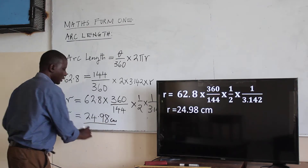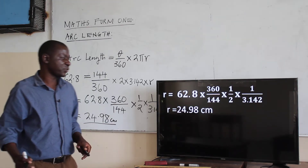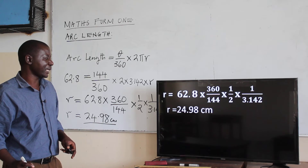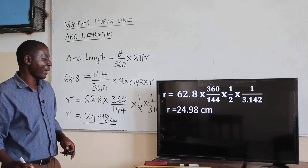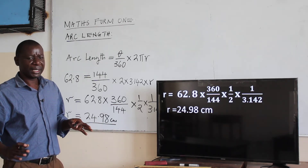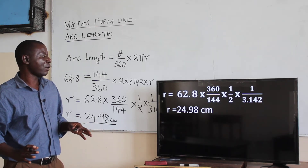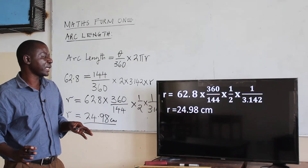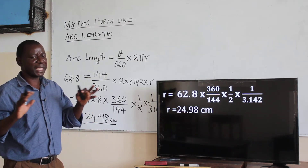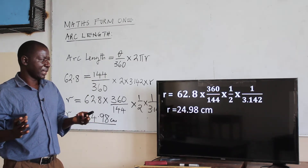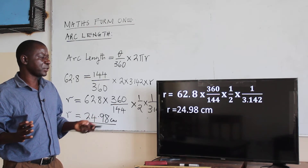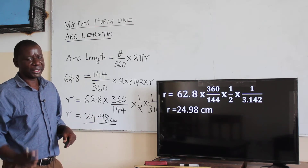So the circle whose radius is 24.98 centimeters will form an arc length of 62.8 centimeters when the angle that subtends that arc is 144 degrees.